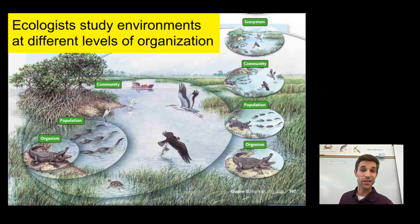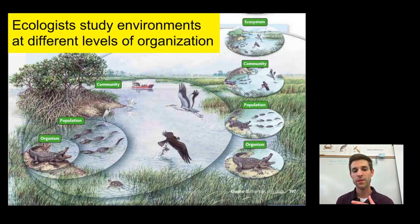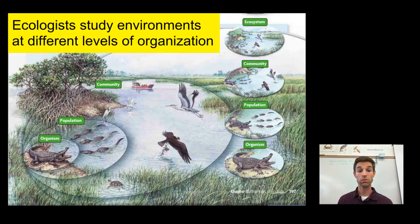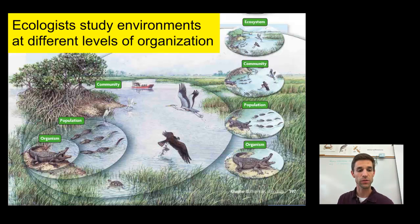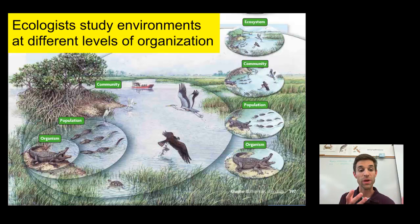Ecologists who study ecology can study environments at different levels, or different levels of organization. In this example of a wetland, there are lots of organisms and also lots of non-living parts of the environment, for example the water or the air. Ecologists can study this whole ecosystem at a variety of levels. One ecologist might be interested in just one kind of organism — for example, just the blue heron, or just the turtle, or maybe just the alligator. That ecologist would be studying what that individual species is doing in the habitat or in the environment.